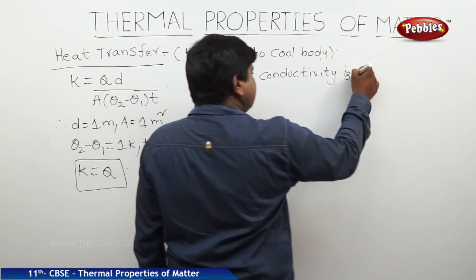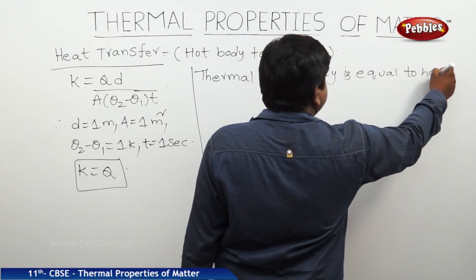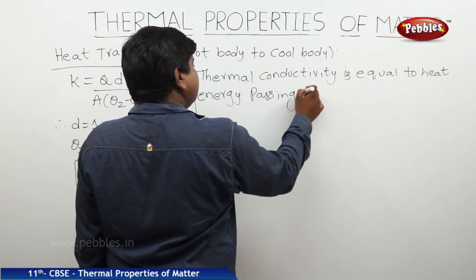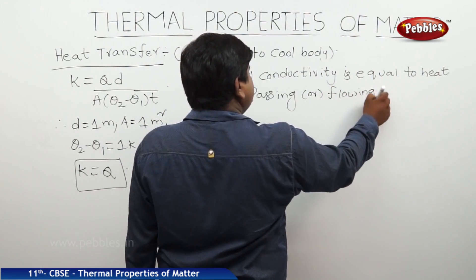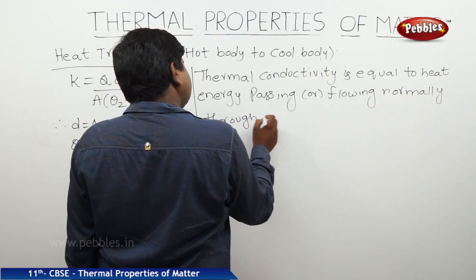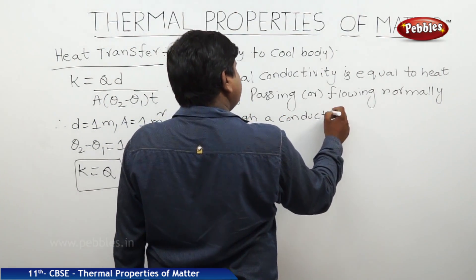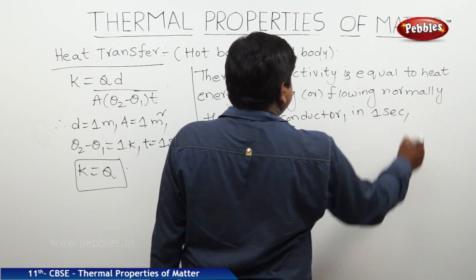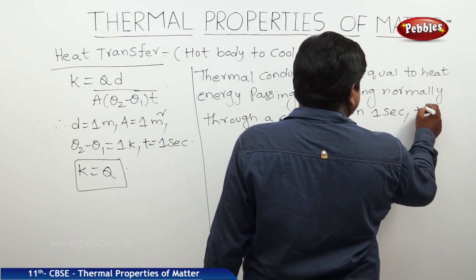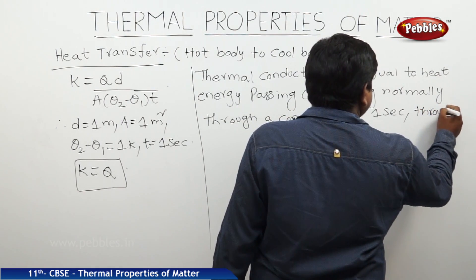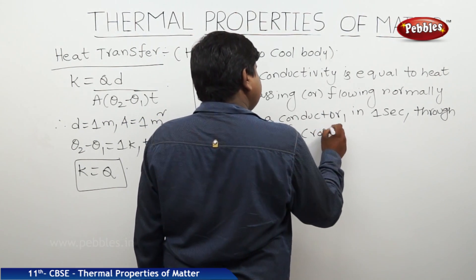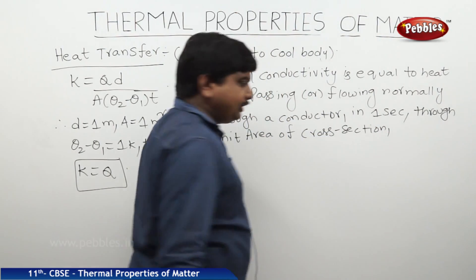Thermal conductivity is the heat energy passing or flowing normally through a conductor per unit area of cross-section in 1 second for a temperature difference of 1 Kelvin.